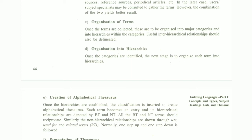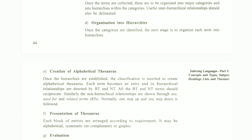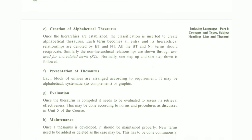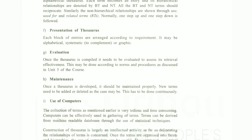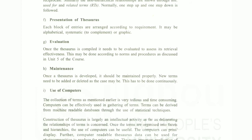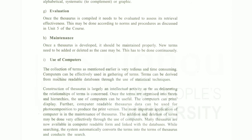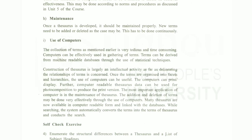The third step is the organization of terms. Once the terms are collected, they are to be organized into major categories and hierarchies, and arranged alphabetically. Further steps include evaluation — to evaluate the Thesaurus effectively — and maintenance, including the use of computers.